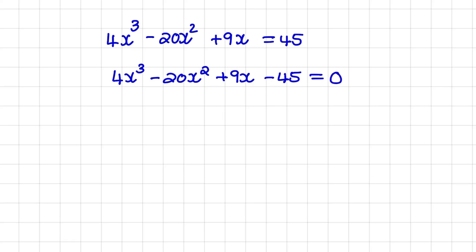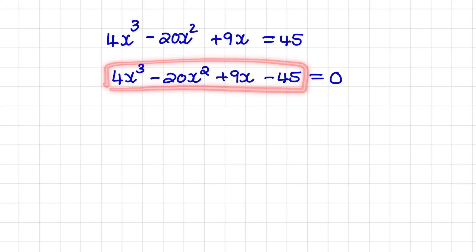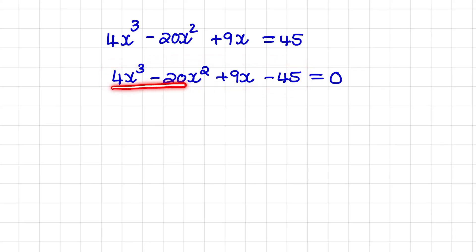Now what we want to do is attempt to factor this expression and I'm going to use a method called grouping. So I'll group the first two terms together and take out a greatest common factor and then I'll group the third and fourth term together and take out a common factor.